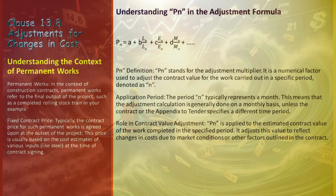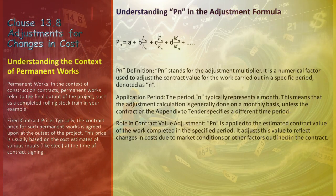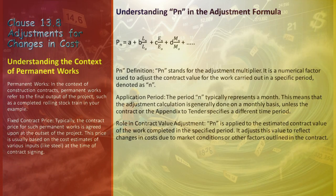PN stands for the adjustment multiplier — a numerical factor used to modify the contract value for work conducted in a specific period N. Typically, N represents a month, suggesting that adjustments are usually calculated monthly, although this can vary if the contract or appendix to tender specifies differently.